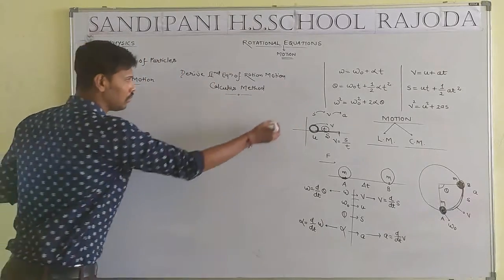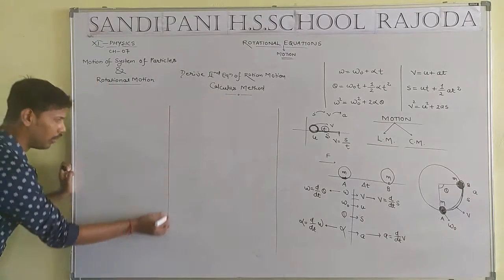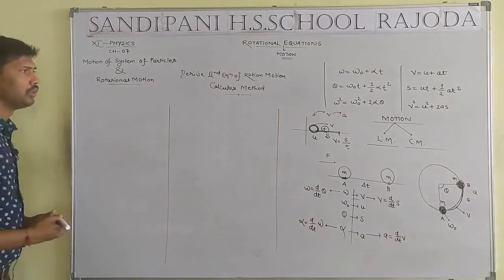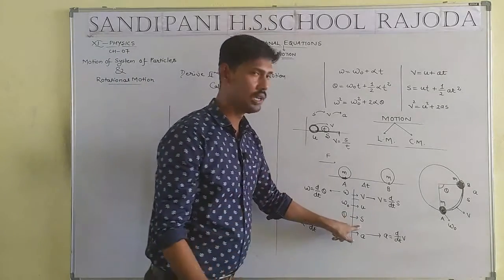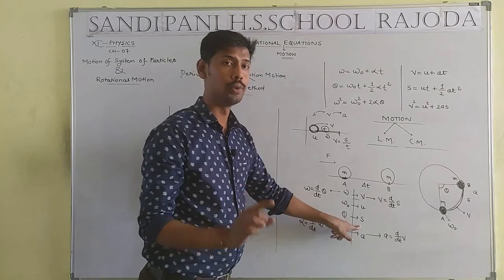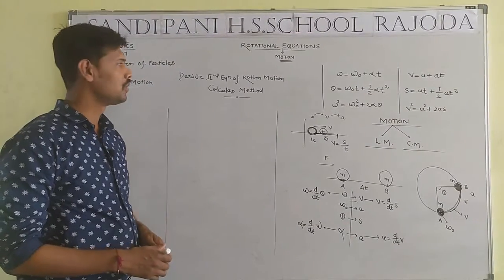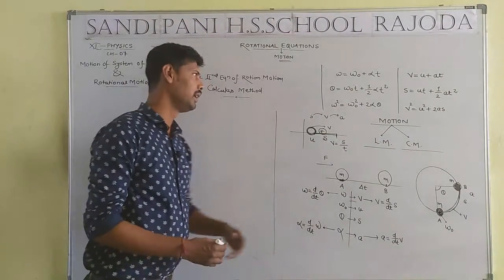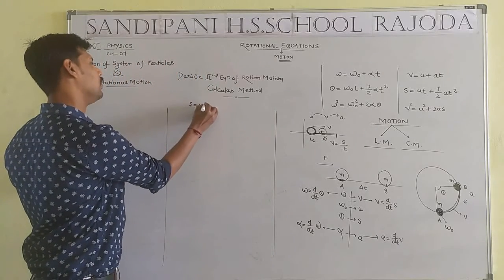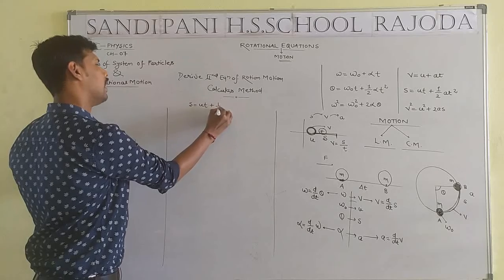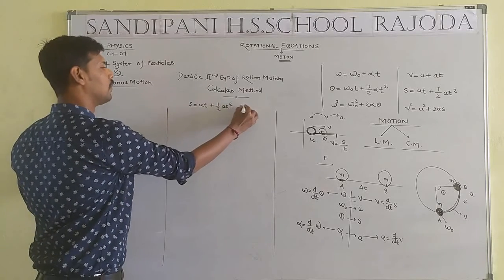We will solve this question twice — first in the form of u, v, a, and s (linear motion), then in rotational form. We define the second equation of motion: S = ut + ½at², using the calculus method.